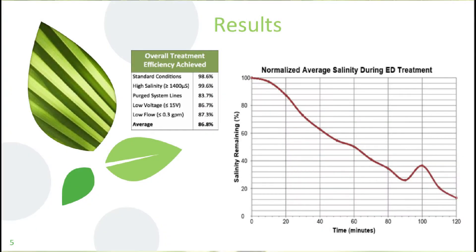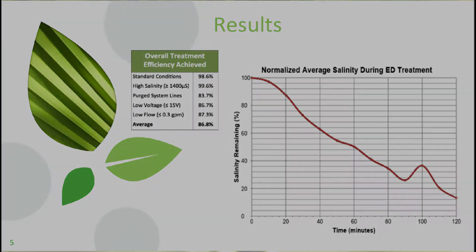The overall results for all of the trials showed an average reduction in salinity of about 87%. Our highest reduction was 99.6%, which is a huge reduction over time. And that was starting with a high salinity of over 1,400 microsiemens of electro-conductivity. So overall, our bench scale treatment system showed that electrodialysis is a viable treatment option for brackish water.